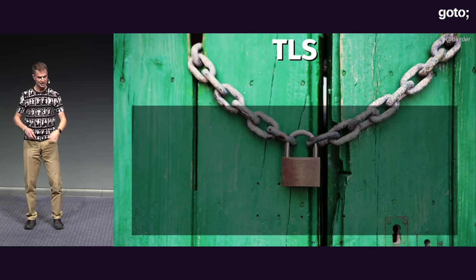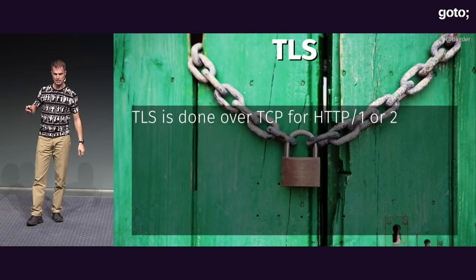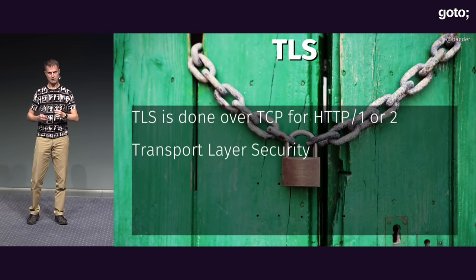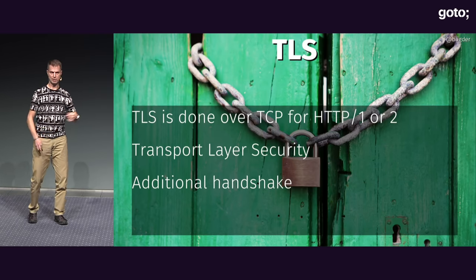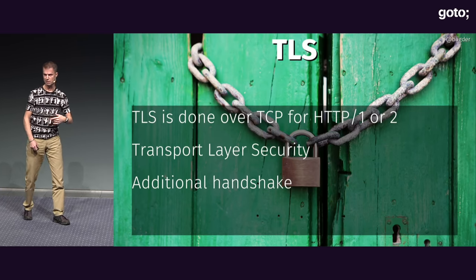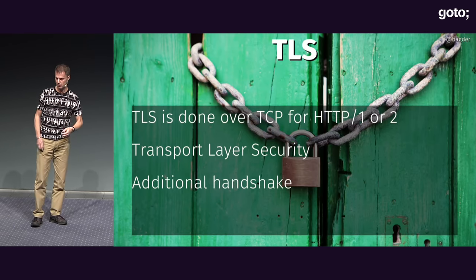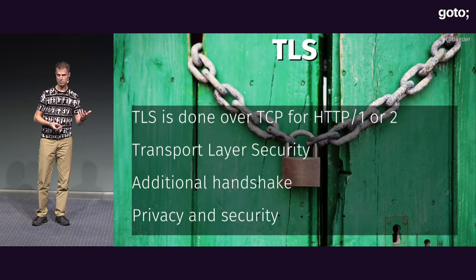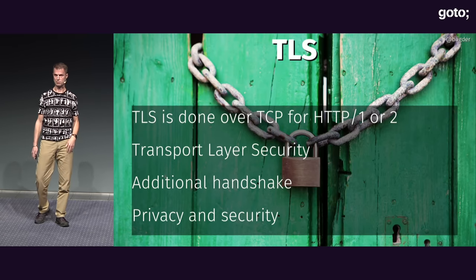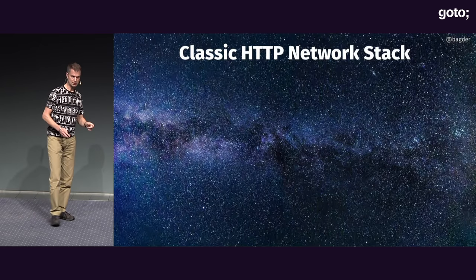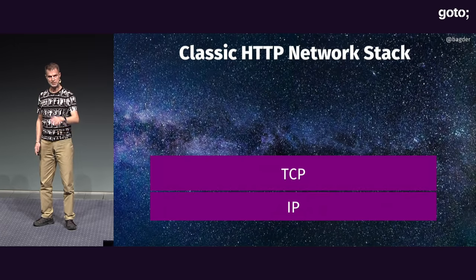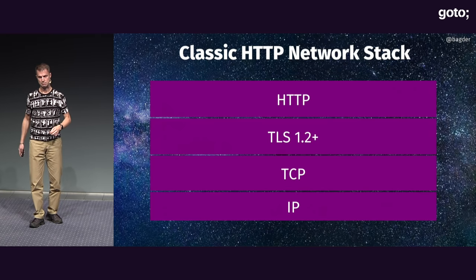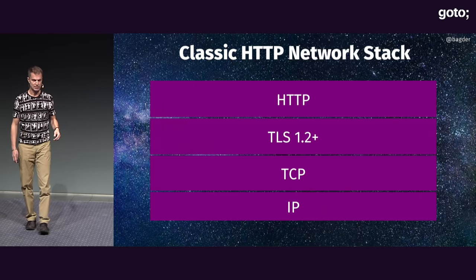So we're talking about HTTPS — HTTPS being TCP with TLS. That's how we do HTTPS for both HTTP 1 and 2. We add the transport layer security on top of TCP, and it adds more ping-pongs depending on the version — more back and forth to get that connection up. Then we have security and privacy: we know who we're talking to, there's no man in between, and nobody can actually drop or tamper with the data in transit. This is how a protocol stack looks like: IP, TCP, TLS, and HTTP. We've done this since we invented TLS, almost 20 years ago.